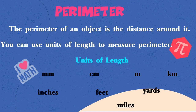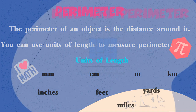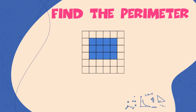Let's do a quick review. Do you remember how to find the perimeter of a shape like this? That is correct — count the sides. Count with me, boys and girls: 1, 2, 3, 4, 5, 6, 7, 8, 9, 10, 11, 12, 13, 14. The perimeter of this shape is 14 centimeters. Awesome job.